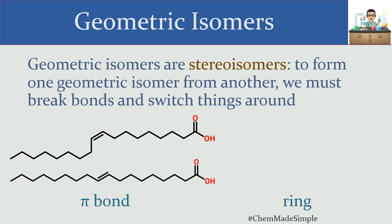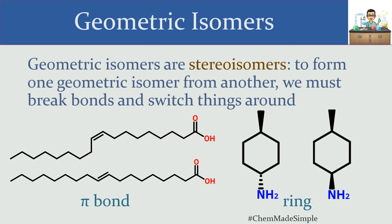Another type of bond that we would need to break is a ring. If I take a look at this ring, in order to make this amine, which is facing away from us, move towards us, I would have to break the carbon-nitrogen bond and the other carbon-hydrogen bond and switch things around, or break bonds inside the ring and reform them elsewhere.